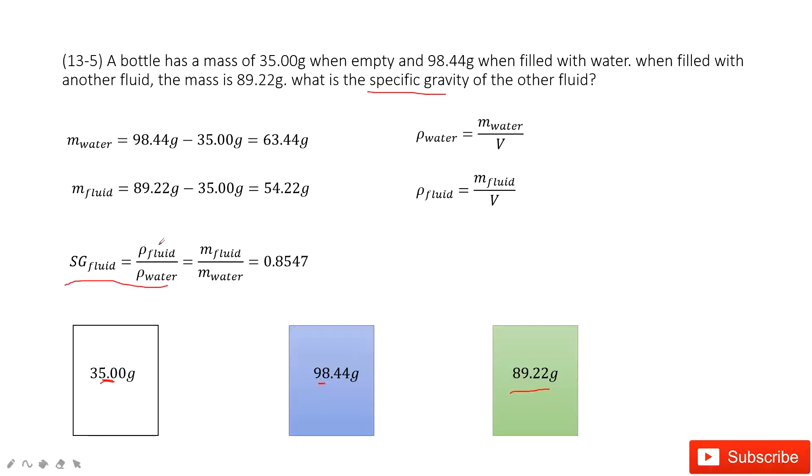So it looks like we need to find the density for water and this fluid. So first we use the function as here. The density for the water is the mass of water divided by volume. Similarly, the density for the fluid is the mass of fluid divided by volume.